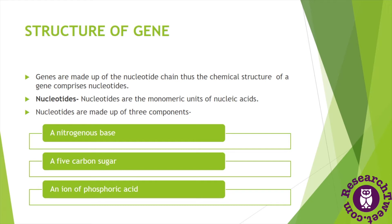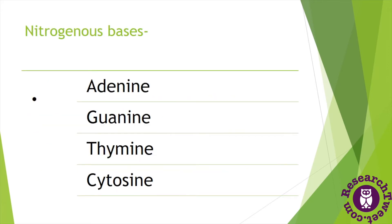Nucleotides are made up of three components: nitrogenous bases, a 5-carbon sugar also called a pentose sugar, and an ion of phosphoric acid. The DNA molecule consists of four types of nitrogenous bases — two are purines and two are pyrimidines. These nitrogenous bases are named adenine, guanine, thymine, and cytosine. In the case of RNA, the thymine molecule is replaced by uracil.